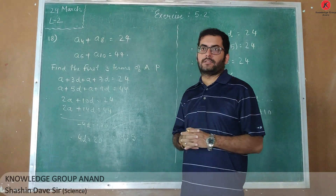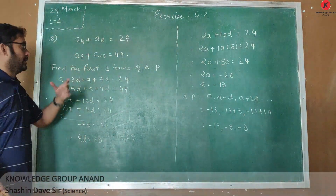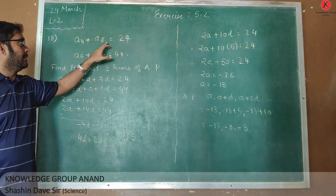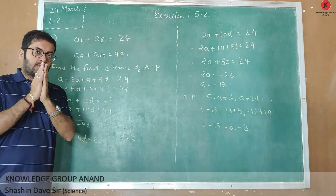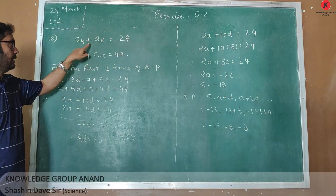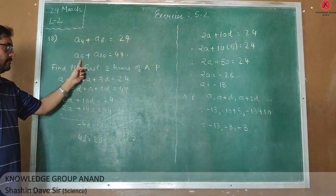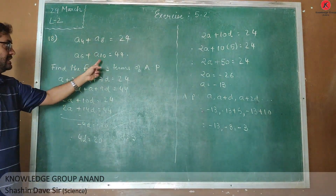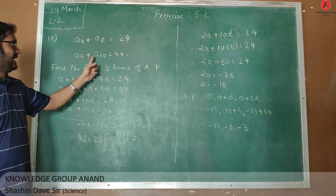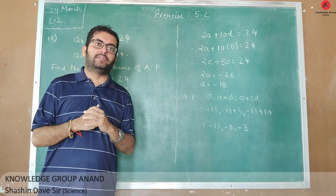Okay dear students, let us solve question number 18 of exercise 1.2. In this particular question, the condition given is that the sum of the 4th term and 8th term of an AP is 24. So A4 plus A8 gives 24. The next condition: sum of the 6th term and 10th term is 44, so A6 plus A10 is equal to 44. Using this data, we need to find the first 3 terms of the AP.